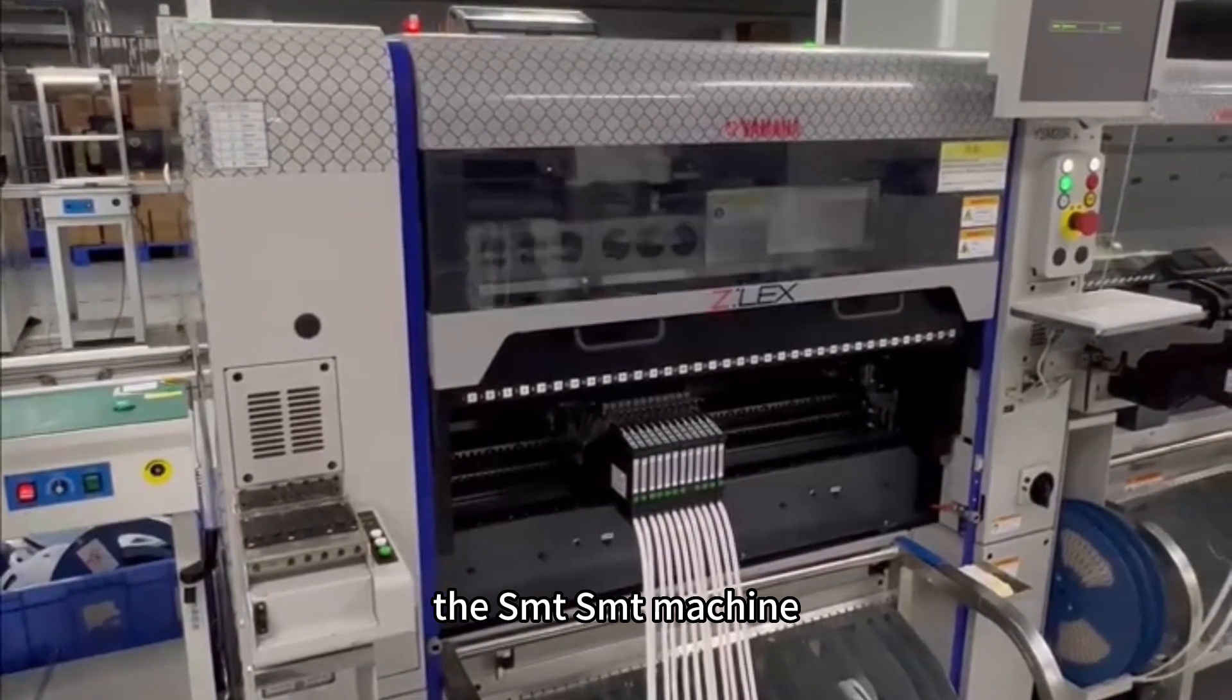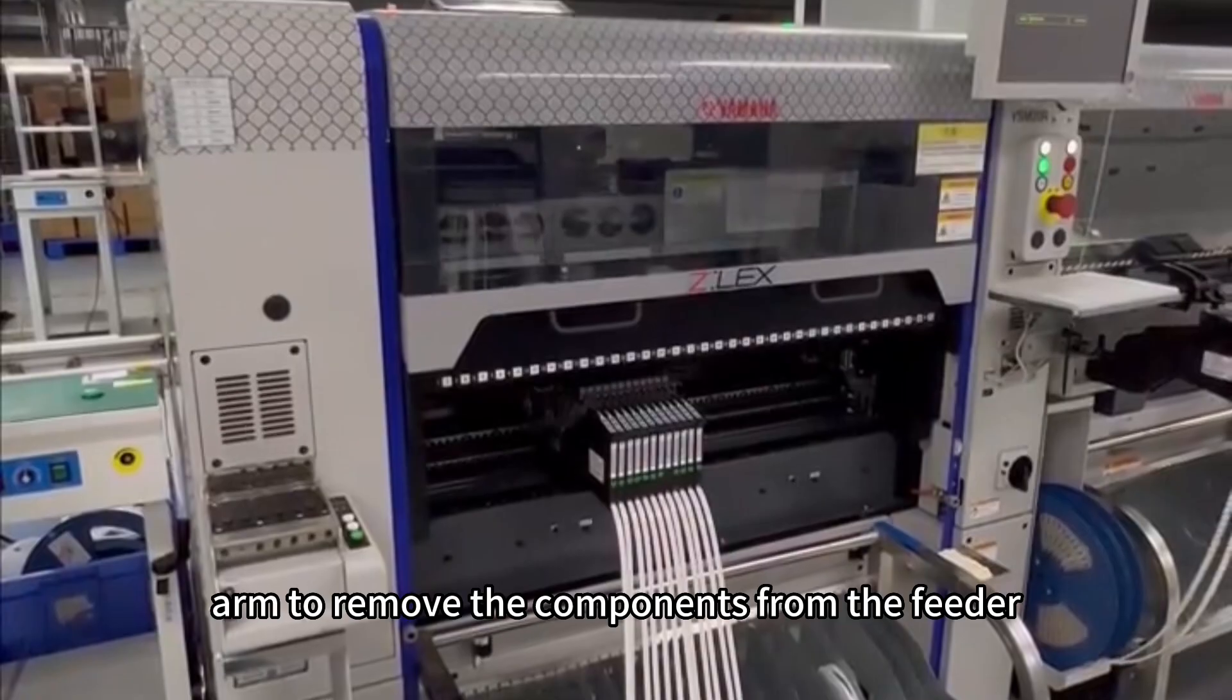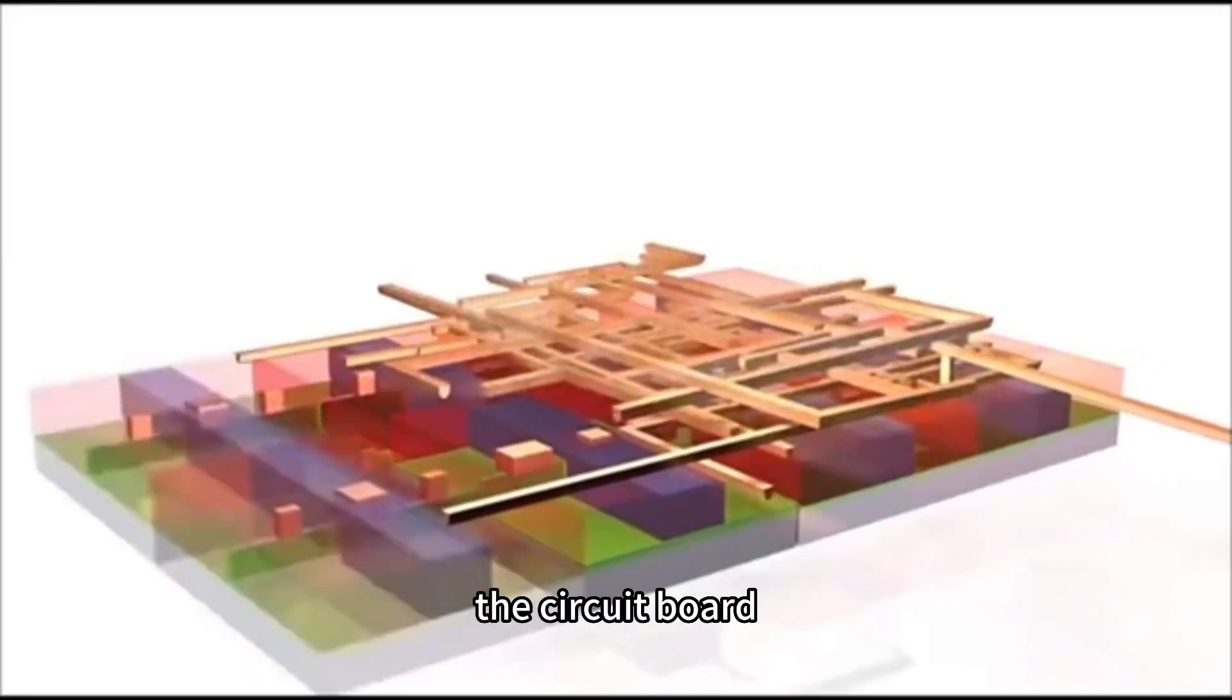The SMT machine uses the automatic robot arm to remove the components from the feeder and place them on the circuit board.